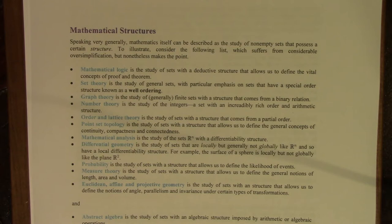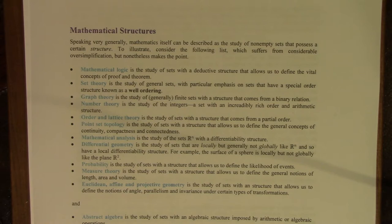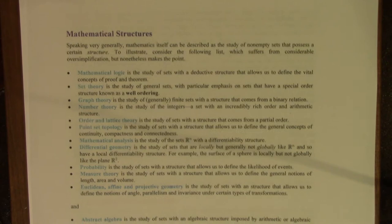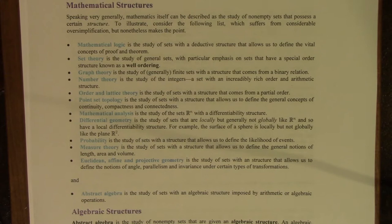Graph theory is the study of generally finite sets with a structure that comes from a binary relation. Number theory is the study of the integers, which is a set with an incredibly rich order and arithmetic structure. It may seem as though the integers are pretty simple, but that is quite deceptive — there are many questions about the integers that we have not been able to answer. Order and lattice theory is the study of sets with a structure that comes from a partial order.